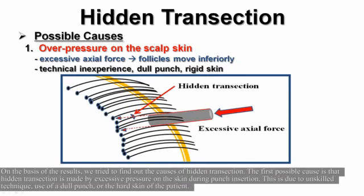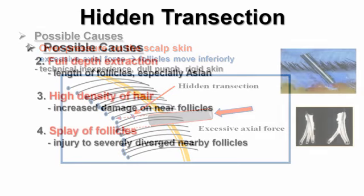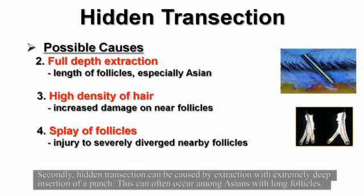On the basis of these results, we tried to find out the causes of hidden transection. The first possible cause is that hidden transection is made by excessive pressure on the skin during punch insertion, due to unskilled technique, use of a dull punch, or hard skin of the patient. Secondly, hidden transection can be caused by extraction with extremely deep insertion of a punch, which can often occur among Asians with long follicles.